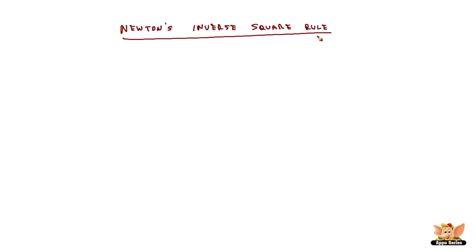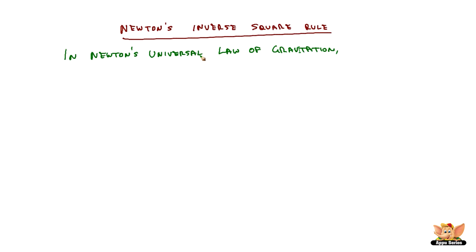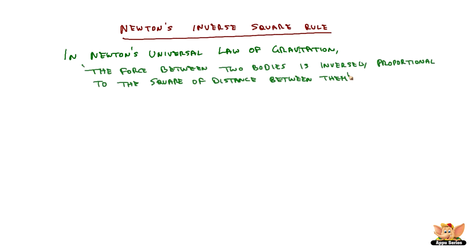Newton's inverse square rule is the basis for the universal law of gravitation conceptualized by Newton. The first part of the universal law of gravitation talks about gravitational force being proportional to the product of masses — that is, the gravitational force between two objects and the product of those two objects' masses. The second part states that gravitational force is inversely proportional to the square of the distance between the two objects.